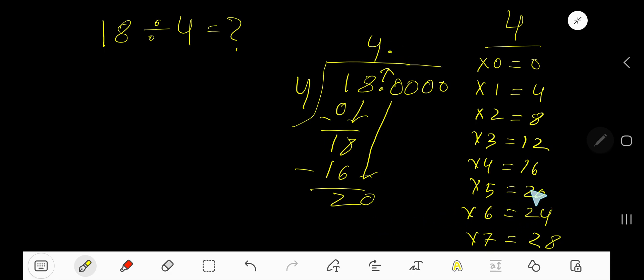4 goes into 20 how many times? 5 times. 5 times 4 is 20. Subtract 0. Our answer is 4.5.